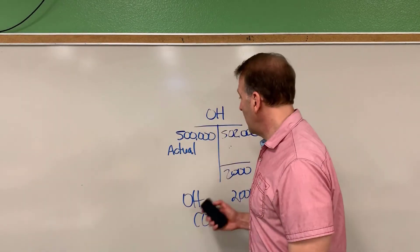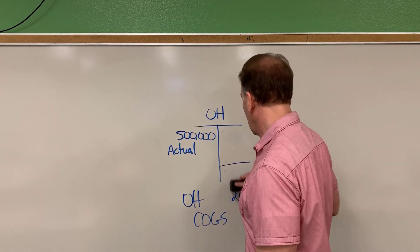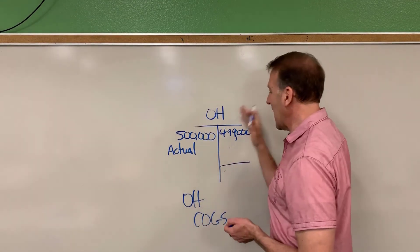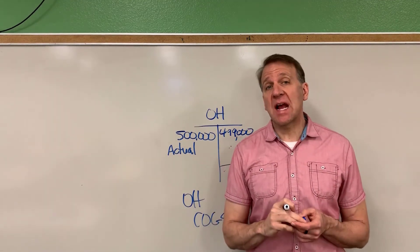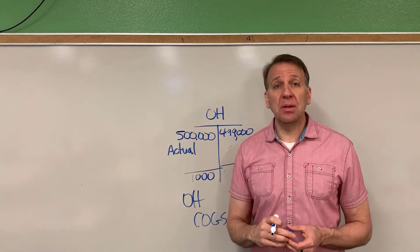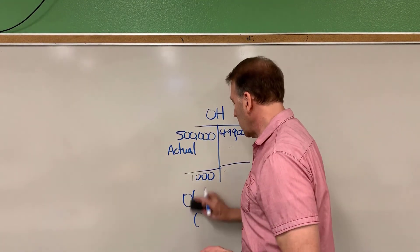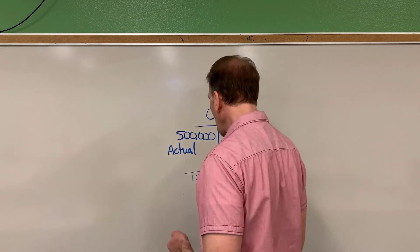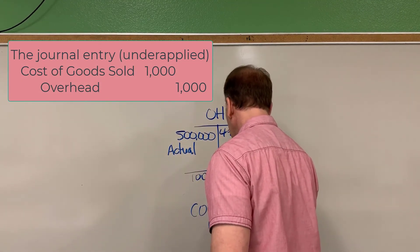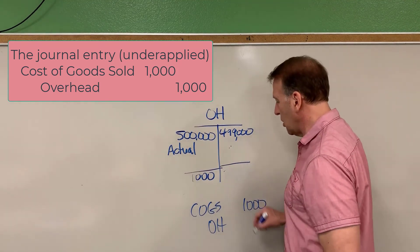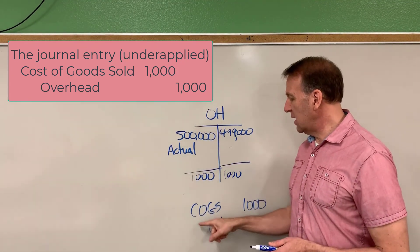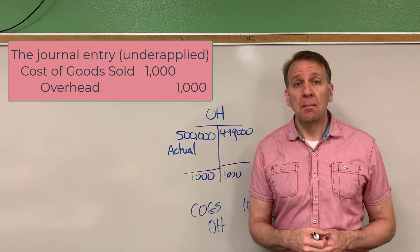Now let's assume that our overhead allocated out was actually $499,000 — so we allocated into work in process $499,000. In this case, we have under-allocated or under-applied our overhead. To close this out to cost of goods sold, we debit cost of goods sold $1,000 and credit overhead $1,000. That credit puts $1,000 in the account, zeroing it out. Since we under-allocated, we increase cost of goods sold by $1,000.